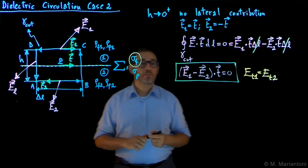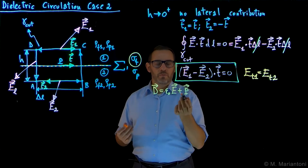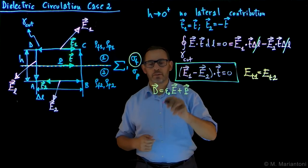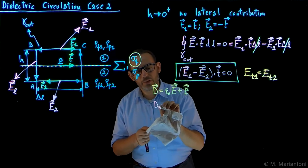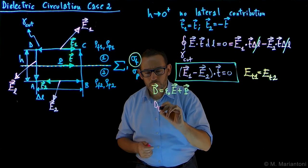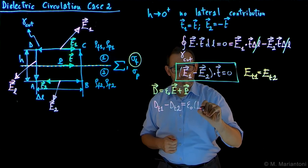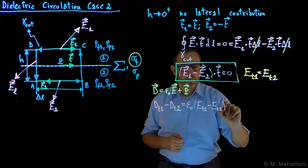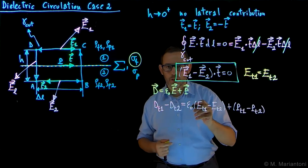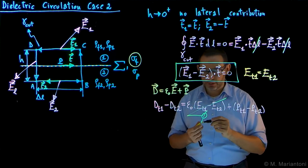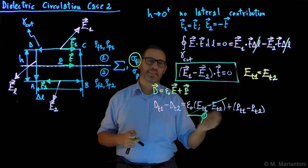Now that we know that, from the definition of D, as always, the free auxiliary vector is epsilon naught E plus P. From this simple definition, clearly we can find that, already in components, DT1 minus DT2 has to be equal to epsilon naught ET1 minus ET2 plus PT1 minus PT2. But we know that epsilon ET1 minus ET2 is all equal to zero because of this property here. They are equal to each other. And so we simply find that the tangent components of D are as discontinuous as the tangent component of P, which makes sense because we already knew that the circulation of D is the same as the circulation of P.